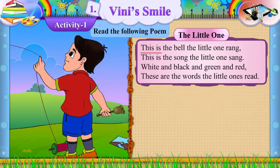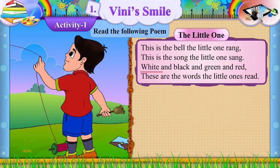This is the bell the little one rang. This is the song the little one sang. White and black and green and red — these are the words the little ones read.